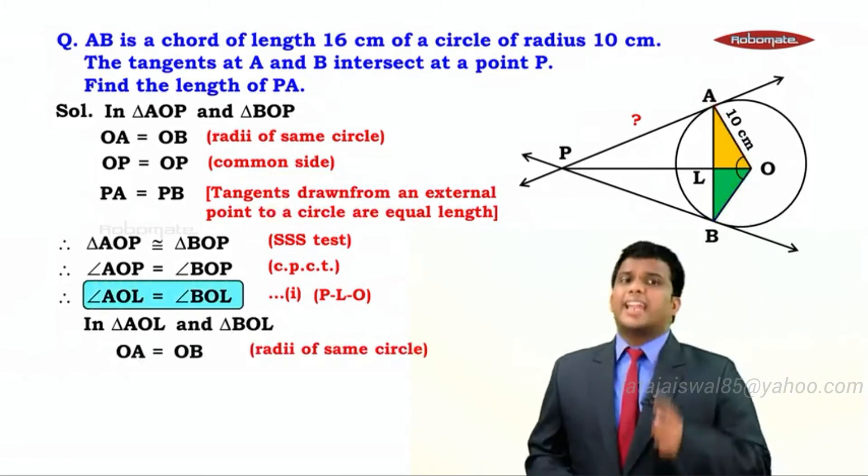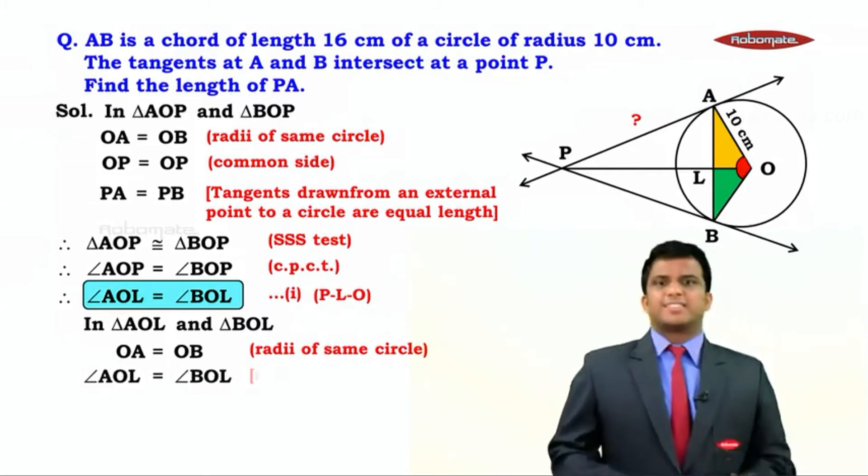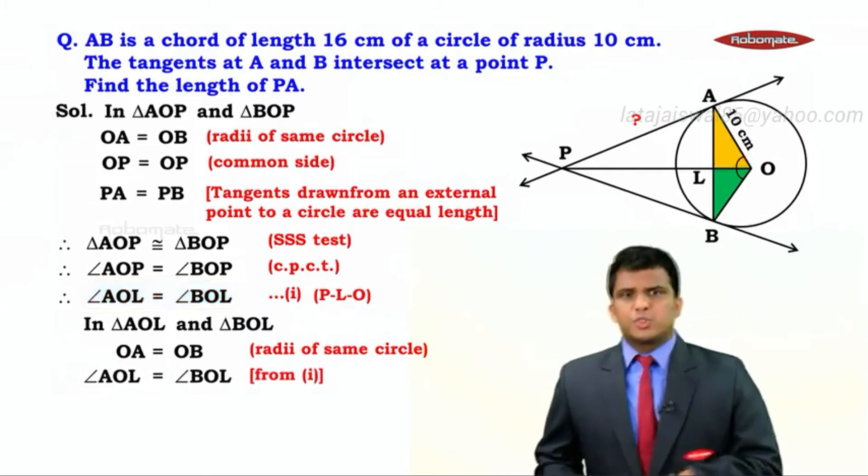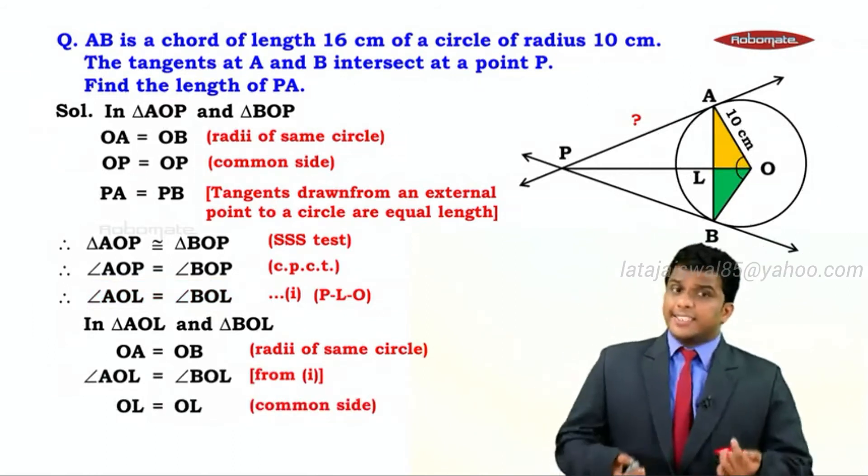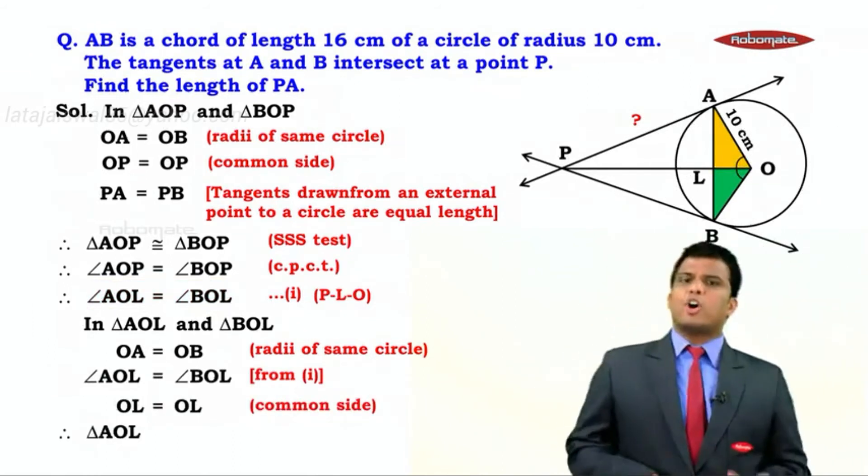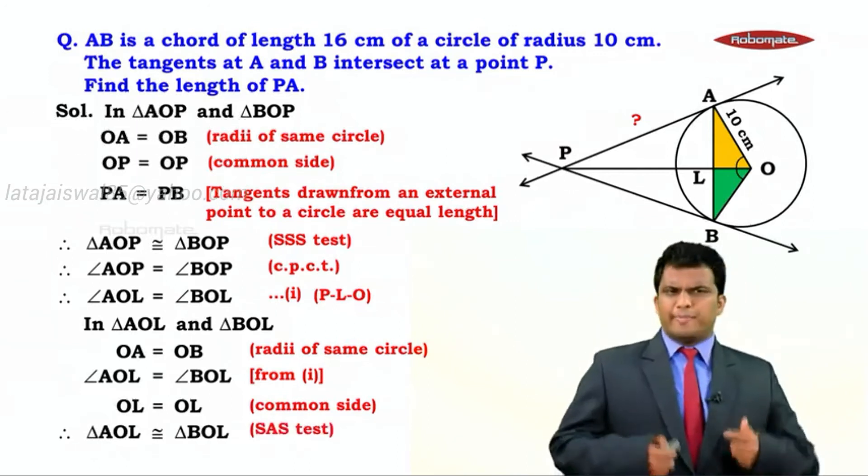From result 1, we can say that angle AOL equals angle BOL. For these triangles, we got it from 1. And also, OL equals OL, it's a common side. That means these triangles will be congruent by the SAS test. Now, how do we benefit out of this?